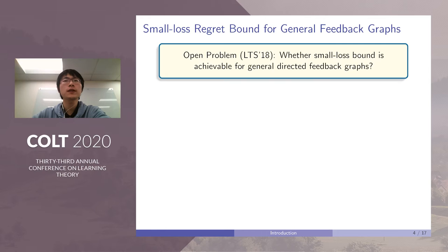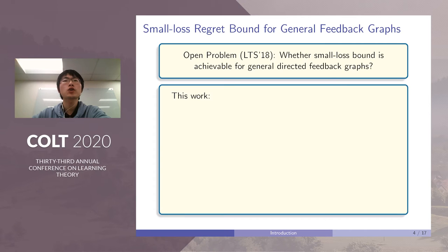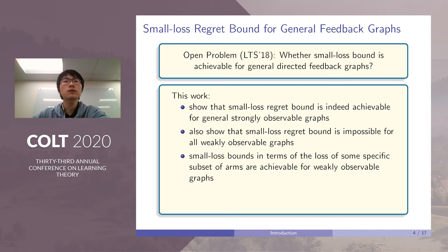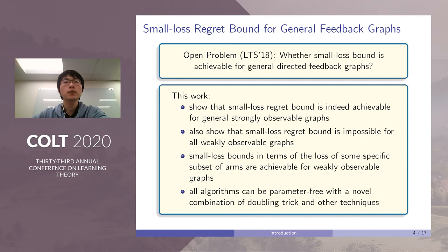In this work, we make a significant step towards a full understanding of this problem. More concretely, our contribution is fourfold. First, we show that a small-loss bound is indeed achievable for general strongly observable graphs. However, for any weakly observable graph, a typical small-loss bound is impossible. Despite this negative result, we prove that small-loss bounds in terms of the loss of some subset of arms are actually achievable for weakly observable graphs. And also, we want to point out that all algorithms we have developed above can be made parameter-free with a novel combination of doubling trick and other techniques.